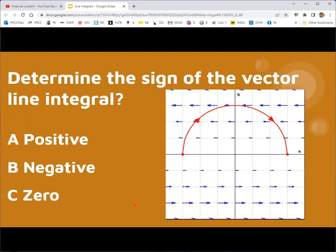So here's a picture of a curve C in red that we're going to use for a vector line integral. And then the vector field is shown by the vectors as the blue arrows in the background. What do you think the sign of the vector line integral would be moving along here? So the correct answer should be B, negative.